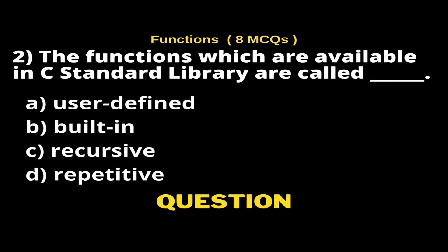Question 2: Functions which are available in C Standard Library are called ___. Options: A) User Defined, B) Built-in, C) Recursive, D) Repetitive. The right answer is Option B, Built-in.